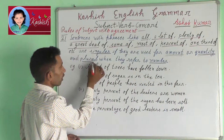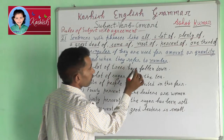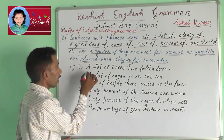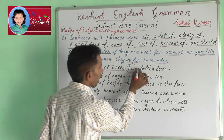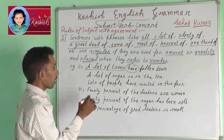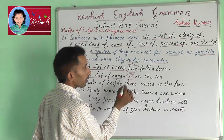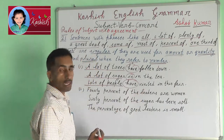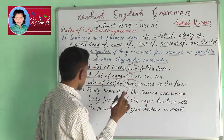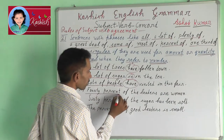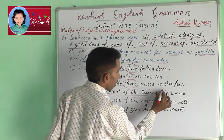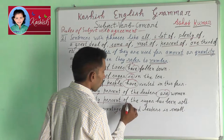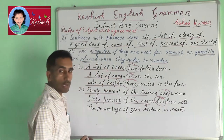And plural when they refer to number. For example: a lot of trees have fallen down. A lot of sugar is in the tea. Lots of people have visited this fair. 40% of the leaders are women. 60% of the sugar has been sold.